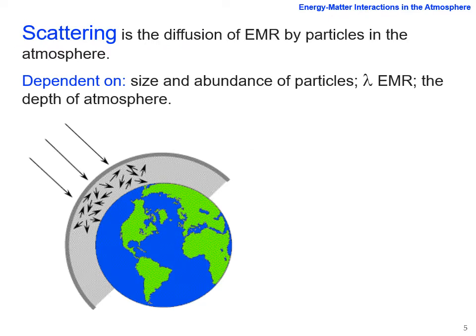The next thing we're interested in is scattering — the diffusion of electromagnetic radiation by particles in the atmosphere. The kind of scattering you get is dependent on the size and abundance of particles, the wavelength of electromagnetic radiation you're interested in, and the depth of the atmosphere.